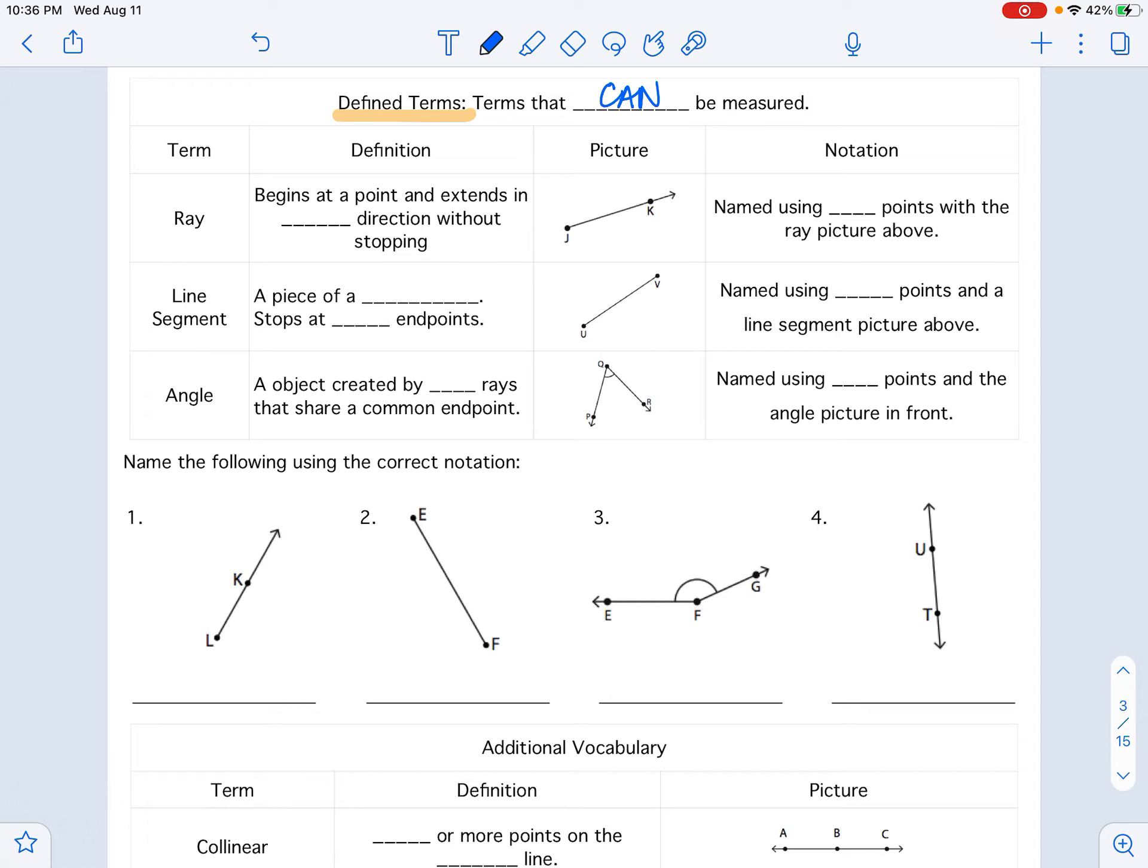We have a ray. A ray begins at a point and extends in one direction without stopping. We name it using two points with a ray picture above it. So this ray in particular would be called JK and the arrow goes from J through K. Your end point, not the arrow, would always be named first. And we're going to take that arrow off to the right.